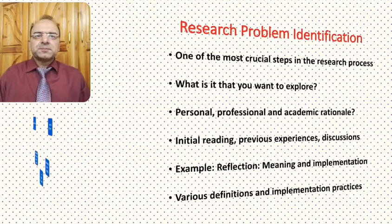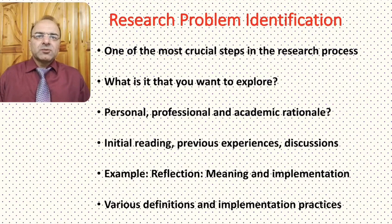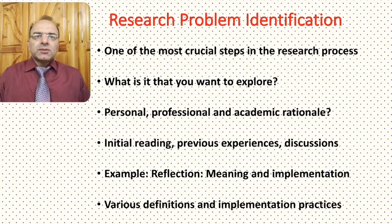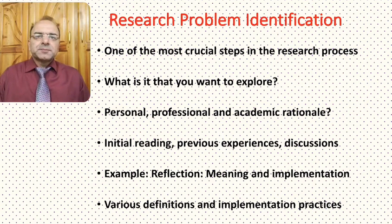Let's begin with research problem identification. What happens during this stage of the research process? This is one of the most crucial steps in the research process because generally research revolves around finding answers to or exploring a research problem. And so that's why problem identification is a crucial step. At this stage we need to ask the very basic question: what is it that you want to explore?